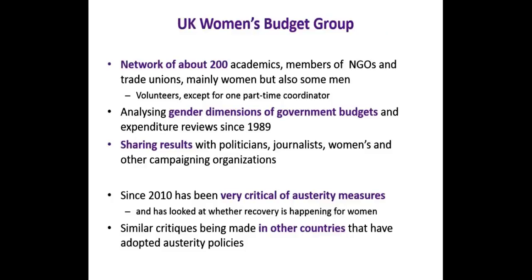The Women's Budget Group is a network of about 200 academics, NGO members, activists, and trade unionists — mainly women, all volunteering except for one part-time coordinator. The main aim is to analyse the gender dimensions of government budgets, having done so since 1989, publicising and sharing results with policymakers. It's not a political organisation — it's an independent think tank, though with strong ideas about gender equality, and results are available for any policymaker.